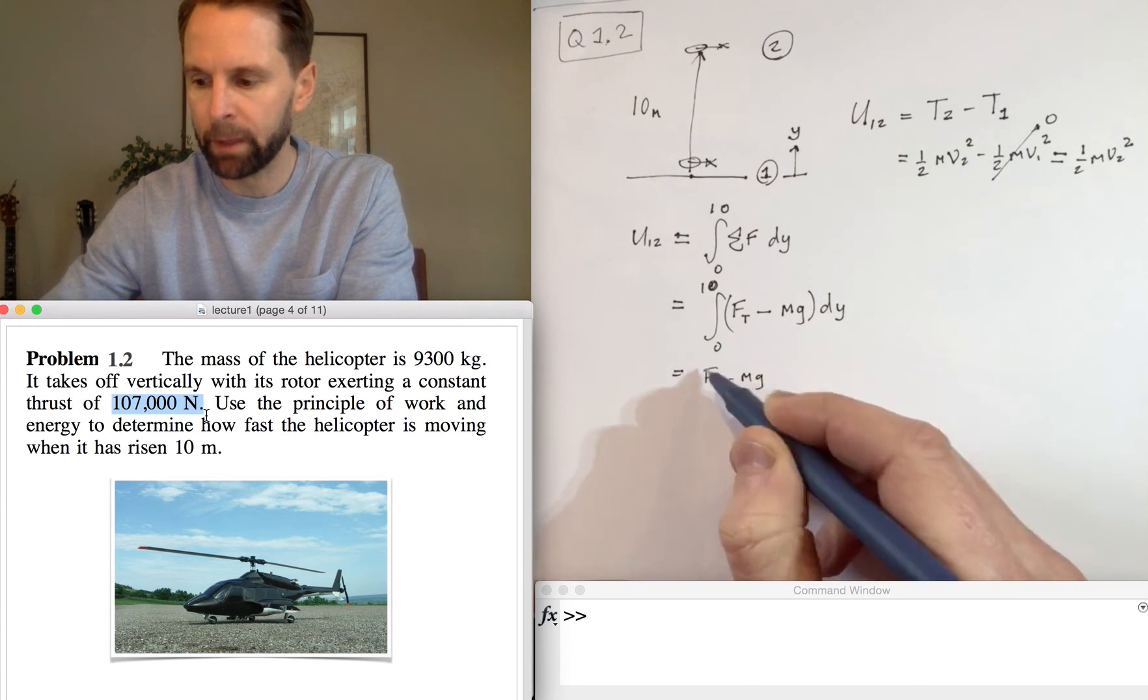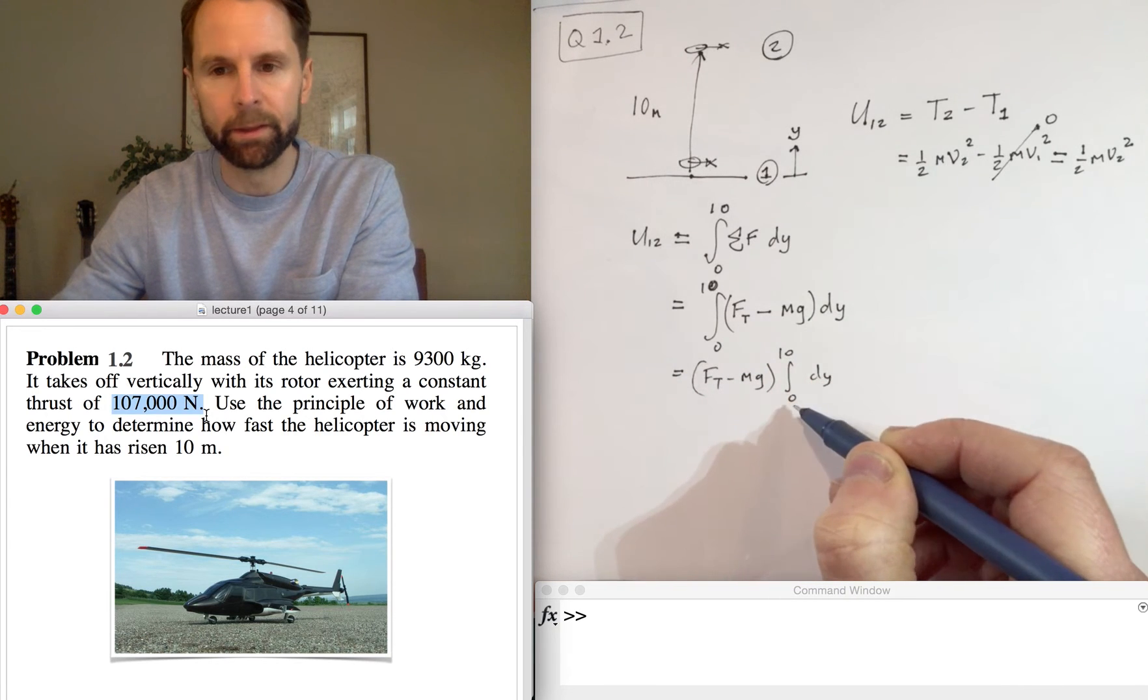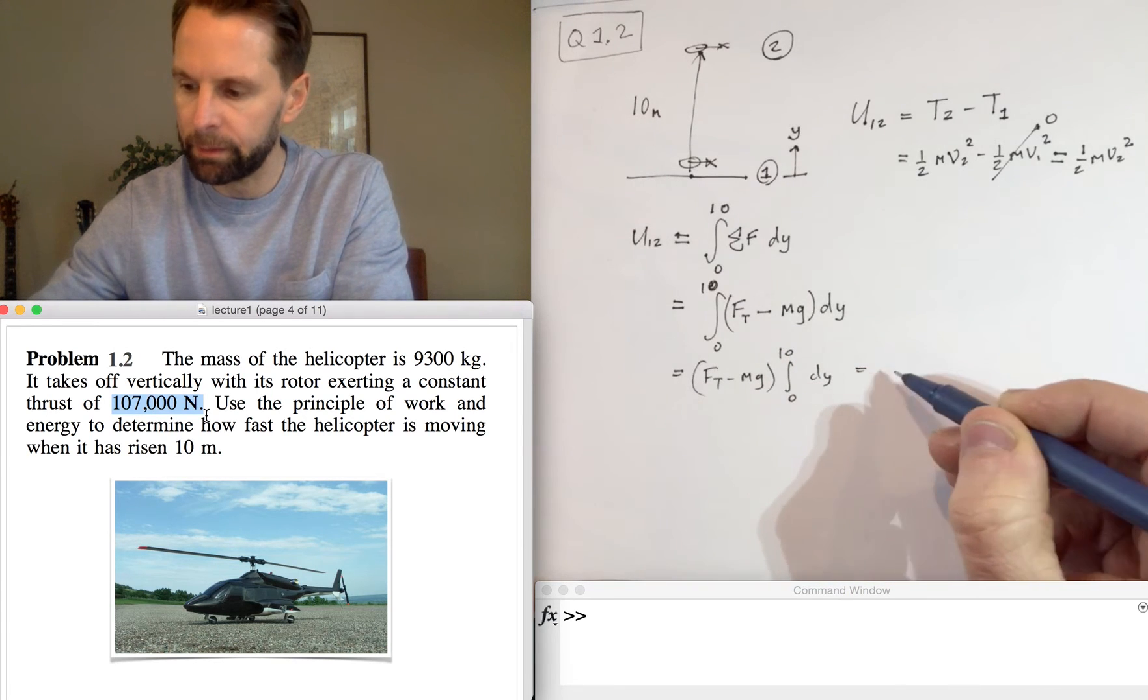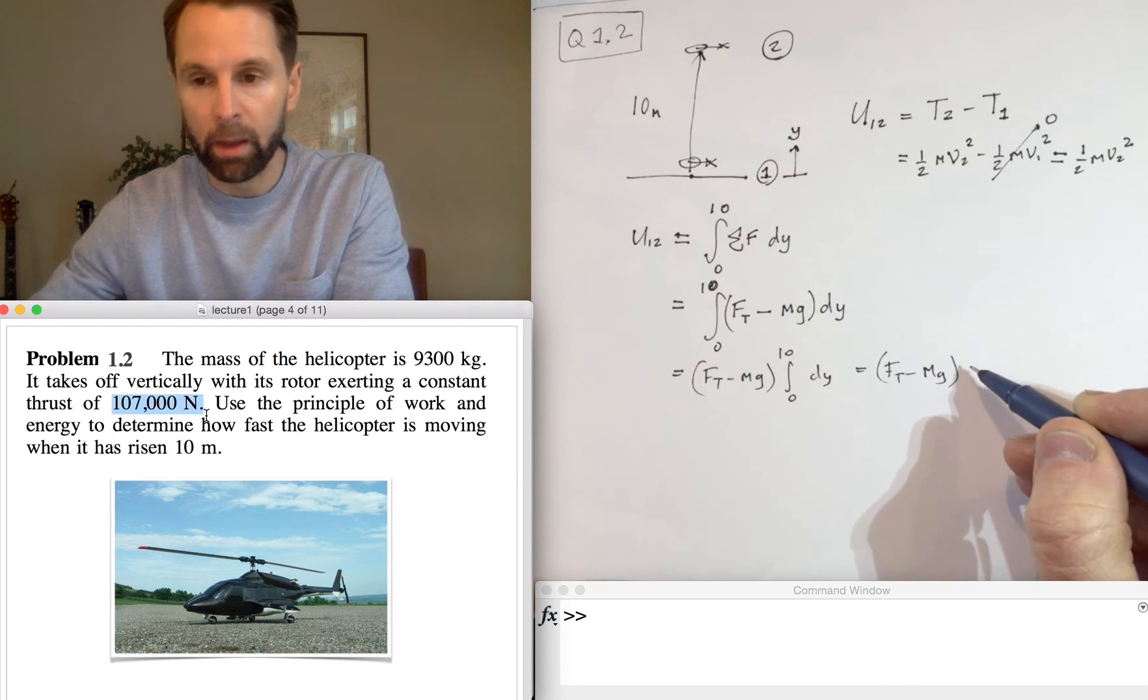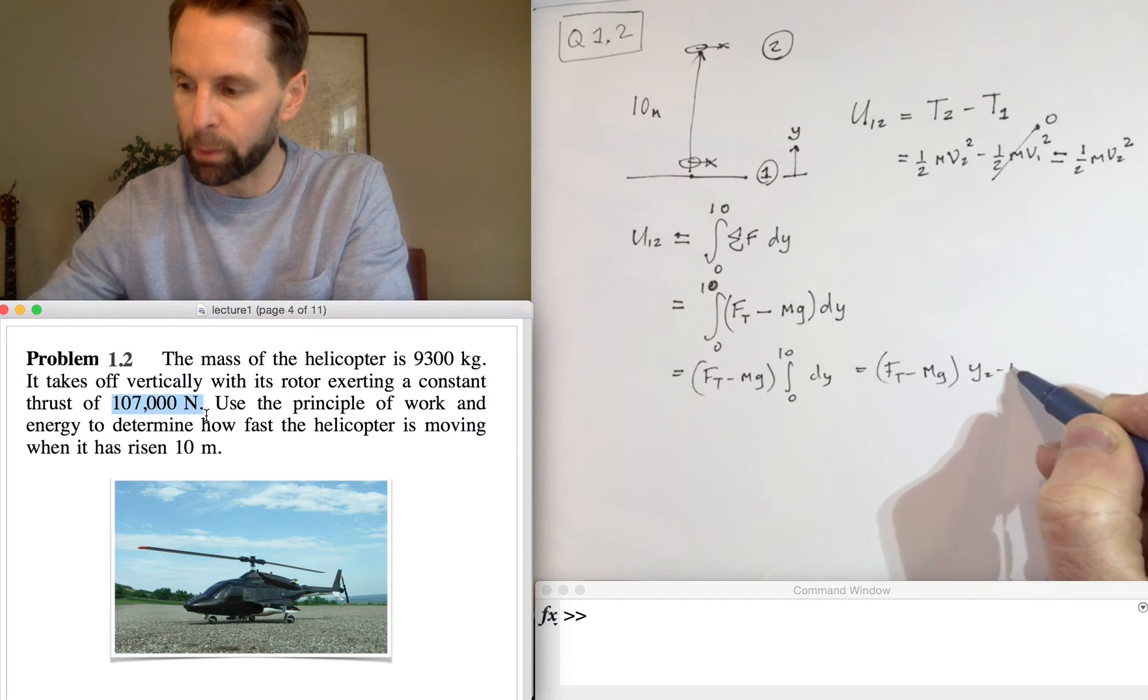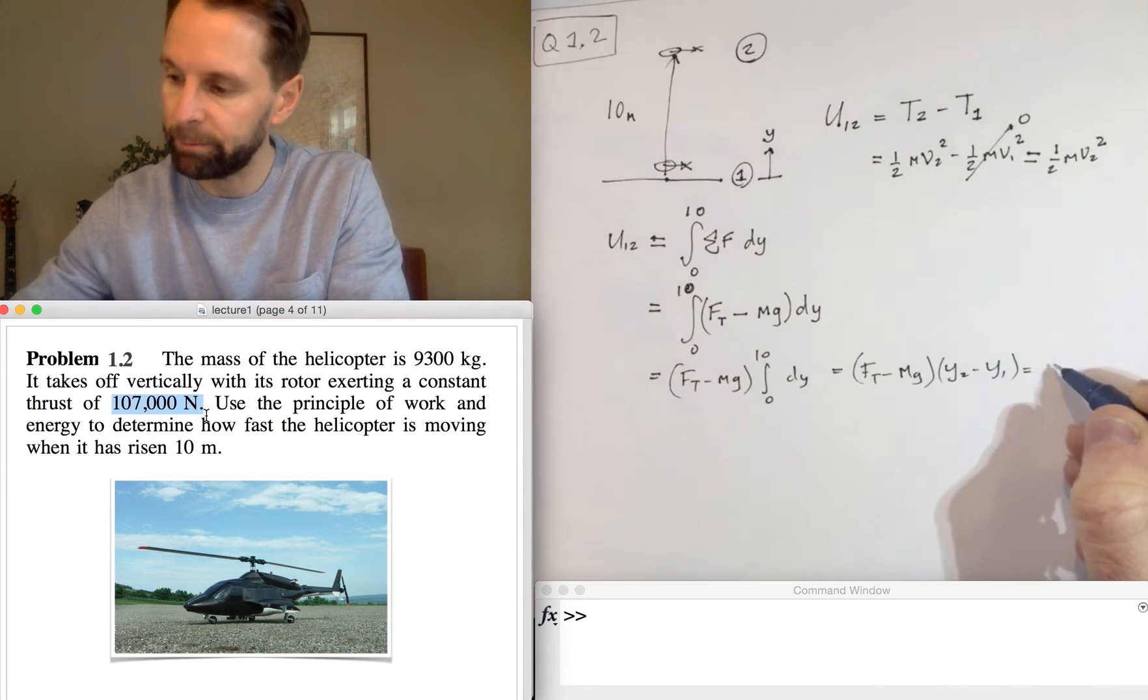So it means that they come outside the integral, so F_T minus mg. You're just integrating one between zero and 10, and if you integrate one, then all you get is F_T minus mg, which is basically y2 minus y1, which in this case is simply F_T minus mg times by 10.